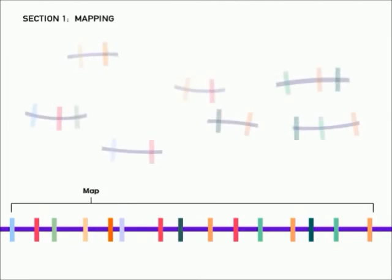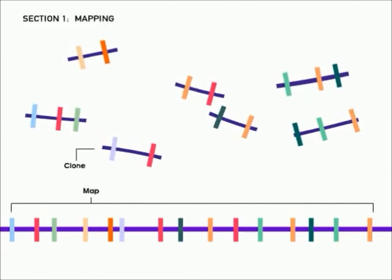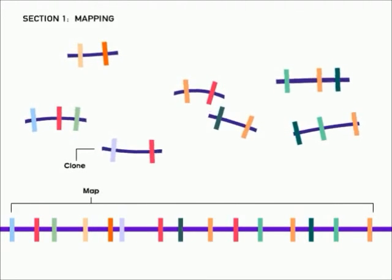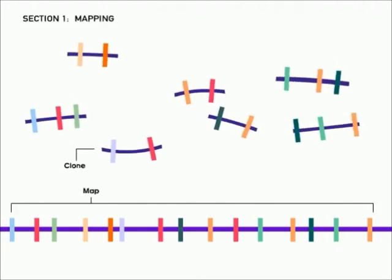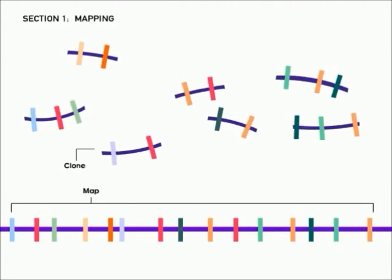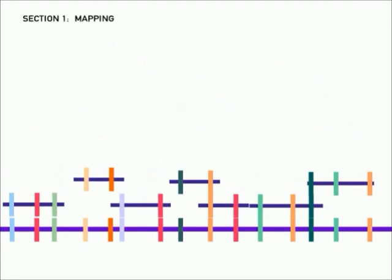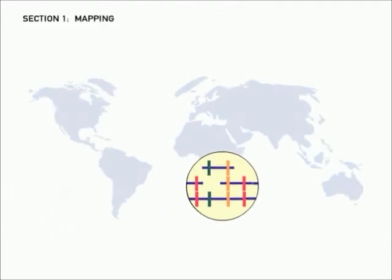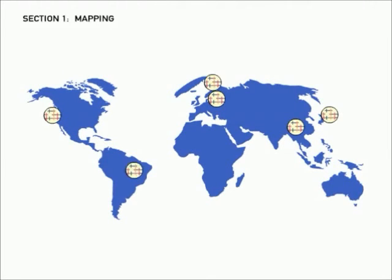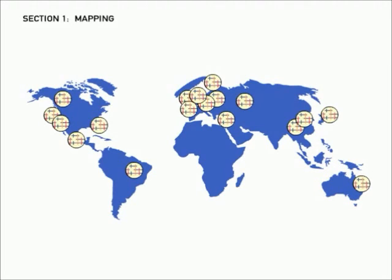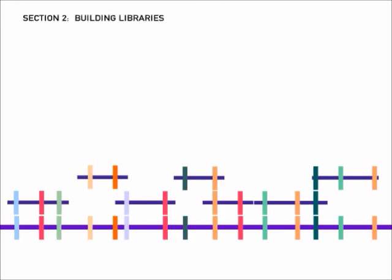With enough landmarks in place, project scientists created libraries of clones that spanned the genome. Each clone contained a manageably small fragment of human DNA that was stored in bacteria. Scientists used the landmarks to tell them what part of the human genome each fragment came from. This clone-by-clone approach made it possible to double-check the location of each DNA sequence. It also allowed participating laboratories from around the world to carve up the genome and coordinate their work. Clone libraries offered the same advantage of real libraries, orderly access to information.